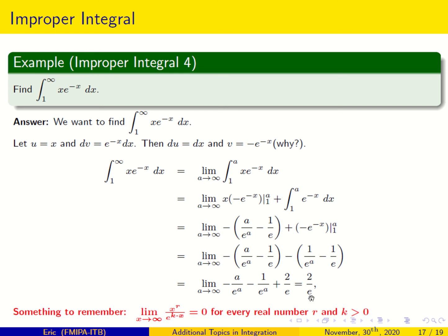So the integral converges to 2 over e. We have now discussed four examples on improper integrals. Next, we will discuss applications of improper integrals in the business world. Thank you very much.